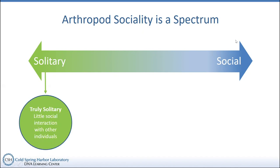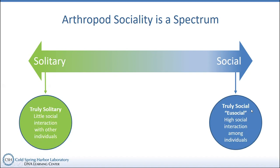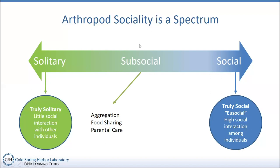On the far right, I have what is termed truly social behavior, also known as eusocial behavior — meaning truly social — which describes a high level of social interaction among individuals of the same species. This whole range in between has a bunch of different behaviors. There's a lot of terminology, but what's important is to understand the behaviors and how they shape the evolution of sociality in arthropods. Collectively, we use the umbrella term 'subsocial' to describe these behaviors — basically meaning below being truly social.